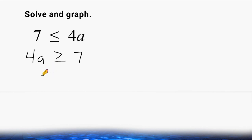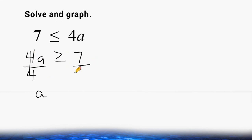Now what we have to do is isolate our variable a. And because we are multiplying it by a number, we have to do the opposite of that operation, which is to divide. We divide 4 by itself, because anything divided by itself is 1, so that leaves us with positive 1a. And on the right-hand side of our inequality, we have to divide by 4 as well to balance things out. So we already have a solution: a can be anything we want to, as long as the value is greater than or equal to 7 quarters.